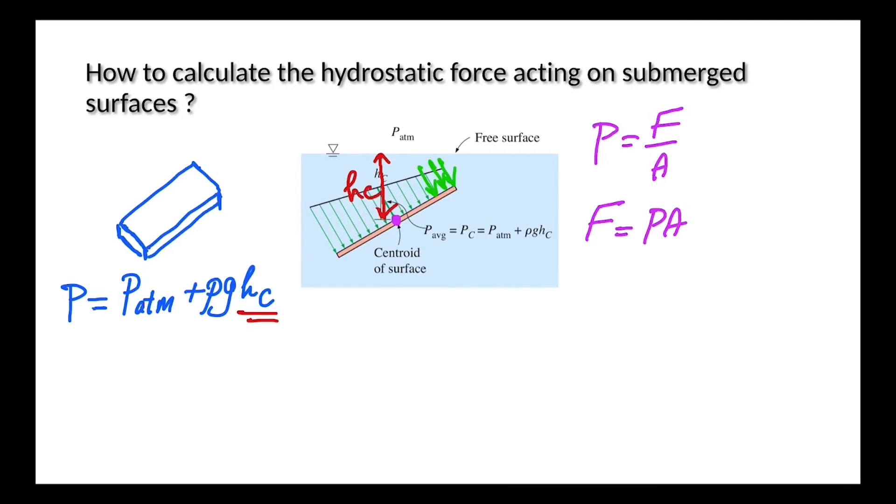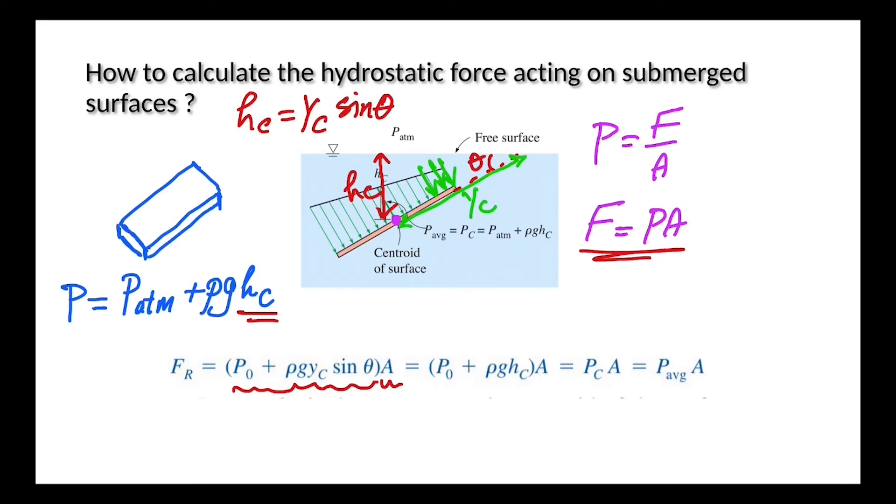We can rewrite HC using an angle of theta with the free surface. If we call the distance here YC, then HC is equal to YC times the sine of theta. Then finally we can say that the resultant hydrostatic force is equal to the total pressure, which is also known as the average pressure, times the area because of this relation. Then we know that FR or the hydrostatic force is equal to PC or P average times A.